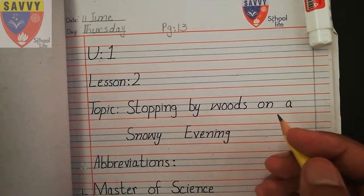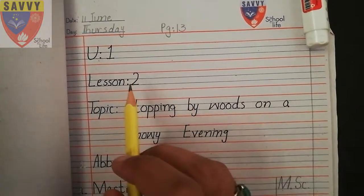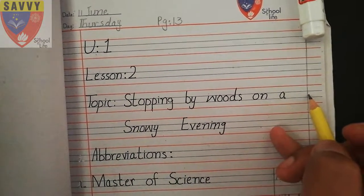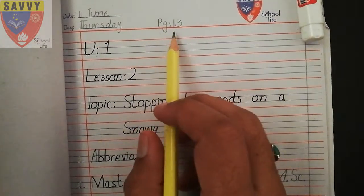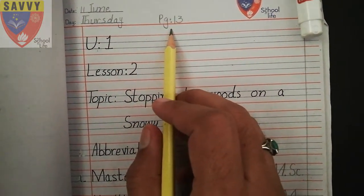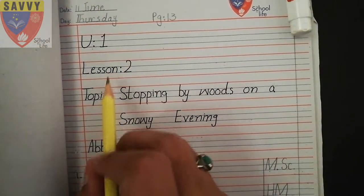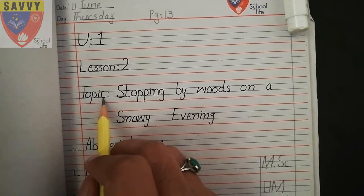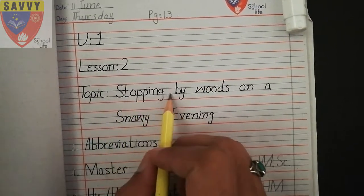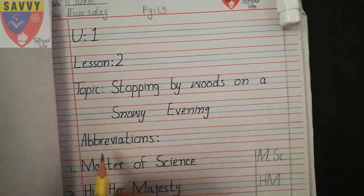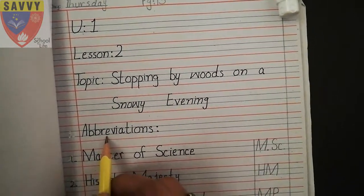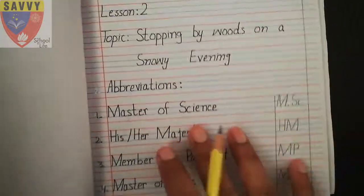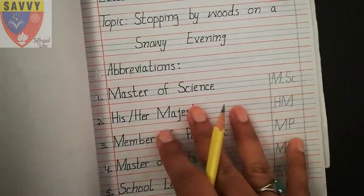Now open your notebooks and draw your module lines. Page number 13. The topic is what we have mentioned on page number one, lesson number two — 'Stopping by Woods on a Snowy Evening' — abbreviations. Let's present your notebook.